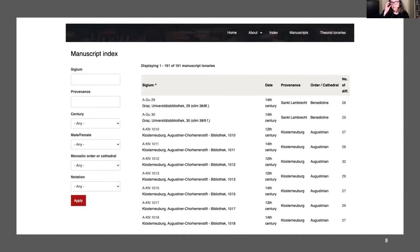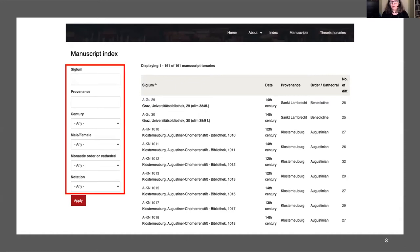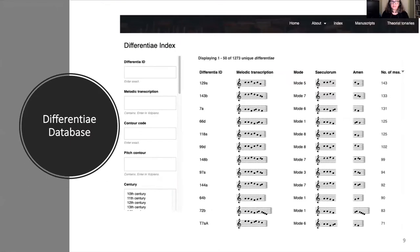The database includes differentiae from 161 manuscripts, searchable through siglum, provenance, century, monastic order, and notation style. The index of differentiae can also be searched by ID, melodic transcription, century, and mode. There are 1,273 unique differentiae in the database, with many instances of each across various manuscripts. This page sorts them by popularity; differentiae 129a in mode 5 appears in 143 manuscripts.